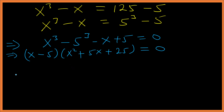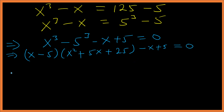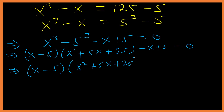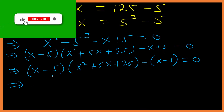We can factor out (x - 5), giving (x - 5)(x² + 5x + 25 - 1) = 0, which simplifies to (x - 5)(x² + 5x + 24) = 0.